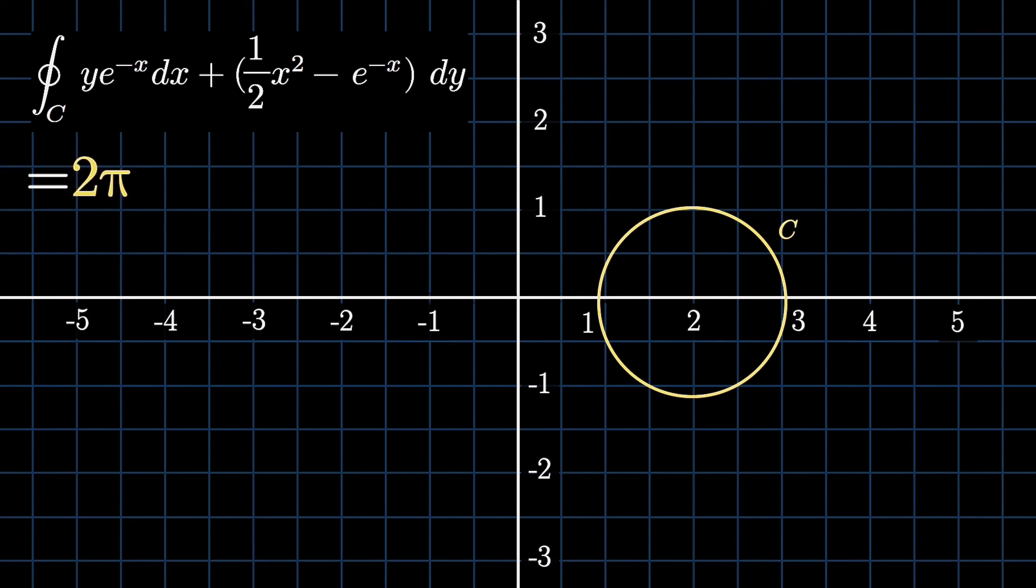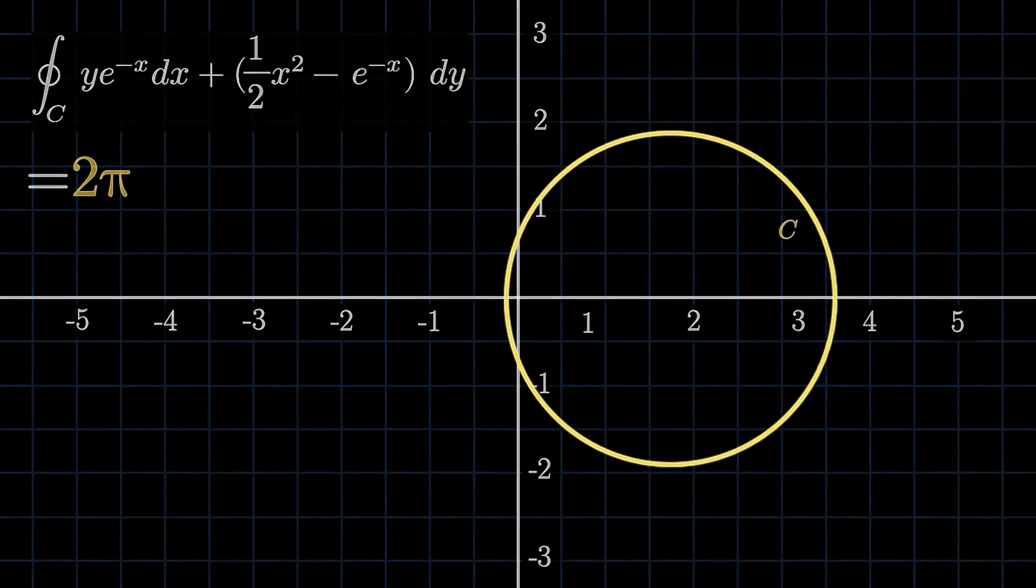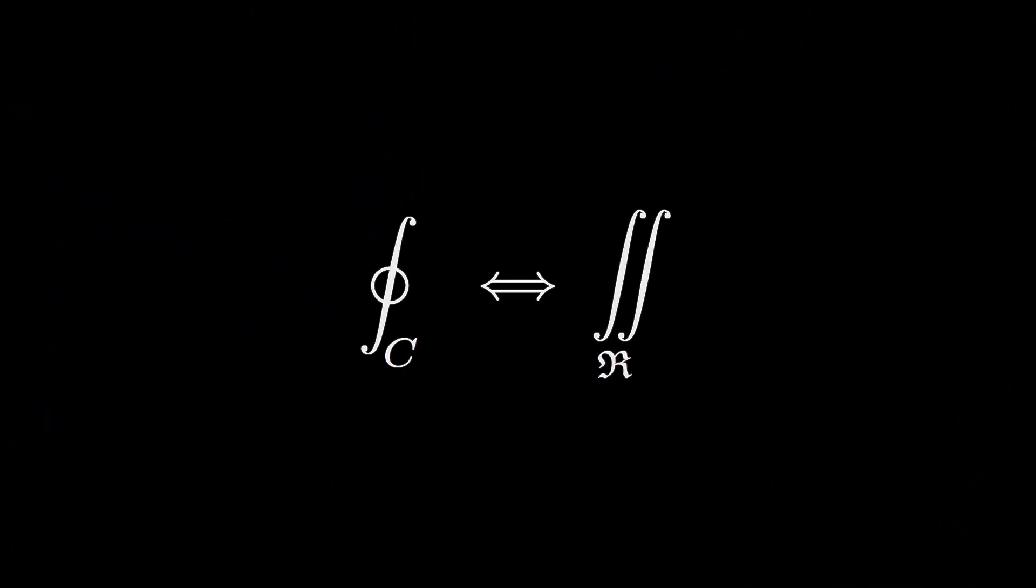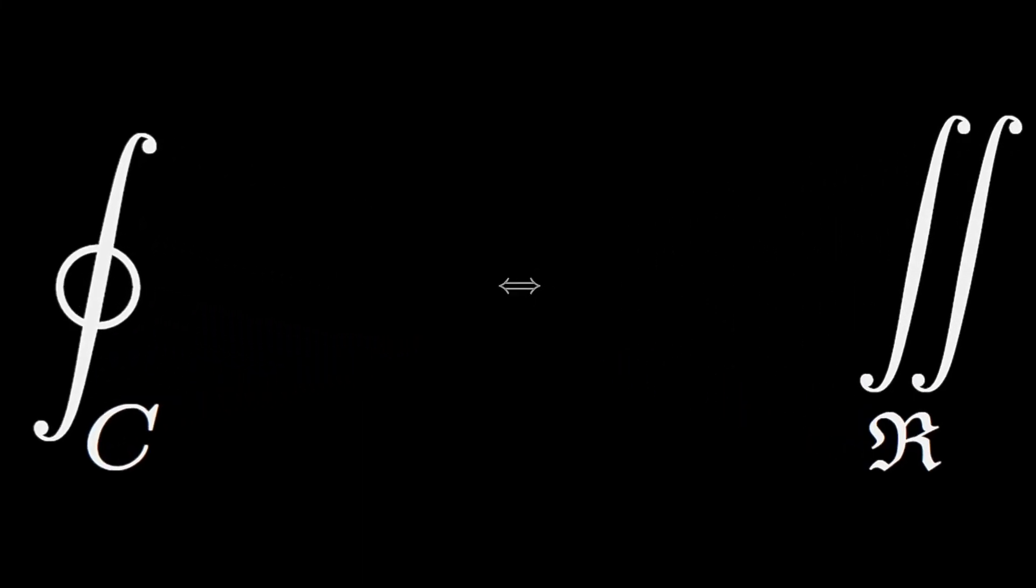As you can see, we have taken a complicated-looking path integral and found the simple result without being bothered by parameterizing our curve and going to polar coordinates and etc. So in a nutshell, this is what Green's theorem does. It is a significant theorem in the world of mathematics as it correlates a line integral with a surface integral.